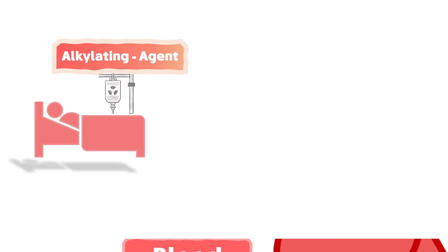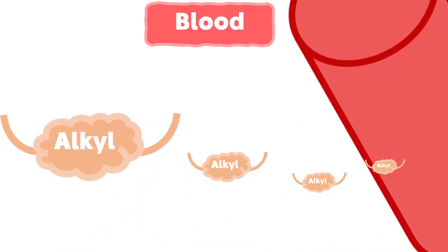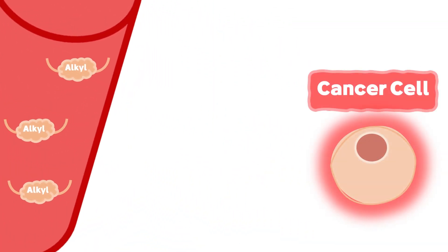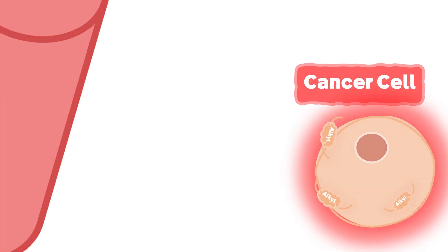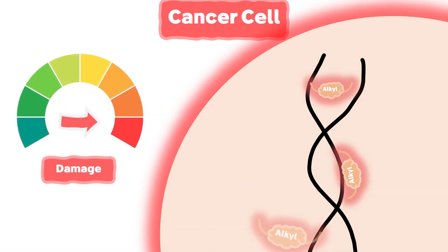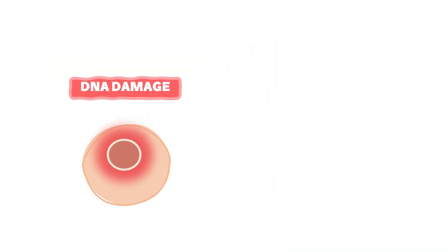After the administration of that chemotherapy to the patient, it travels in the bloodstream and diffuses out to enter the cancer cell, in which it targets the DNA causing a level of damage that will eventually lead to the cell death.